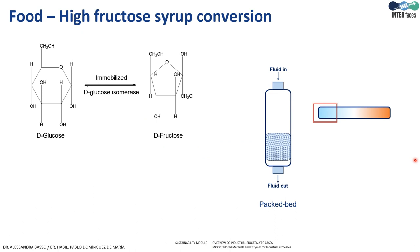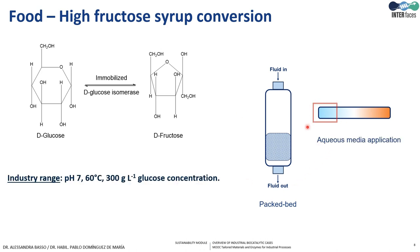One very classic and important example at industrial level is the production of fructose from glucose through immobilized glucose isomerase. In this case, a packed bed reactor is also used. The system is in aqueous media, and an important point to emphasize is that the process is carried out at a very high glucose concentration of 300 grams per liter, producing fructose syrup used widely in the food industry.